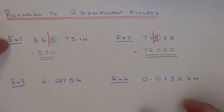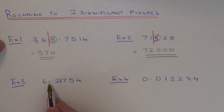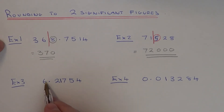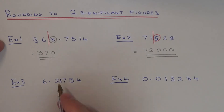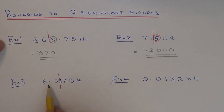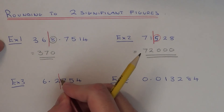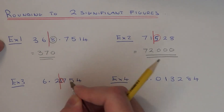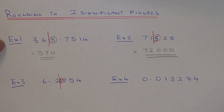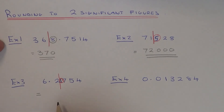So let's move on to example three. This time we've got 6.21754, and again we need two non-zero digits from the start — that's one, two — so we need to cut the number off here. Our two possible answers this time will be 6.2 or 6.3. We need to look at the first digit after the line, which is one. Since that means we need to round the number down, it is closer to 6.2.